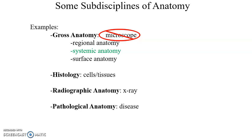Radiographic anatomy uses X-rays to look into the body, giving us the great advantage of examining the body without cutting the person open. Pathological anatomy is the understanding of how a disease affects the anatomy of the body — the only way to diagnose a disease is to know what the symptoms and signs look like.